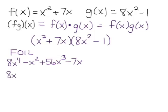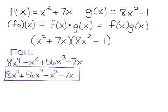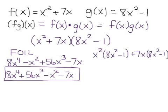We write polynomials in standard form, starting with the highest exponent and working down. Some people prefer to distribute: take x squared and multiply by both terms, then take 7x and multiply by both terms. Either way we get 8x to the 4th plus 56x cubed minus x squared minus 7x — the same result as FOIL.